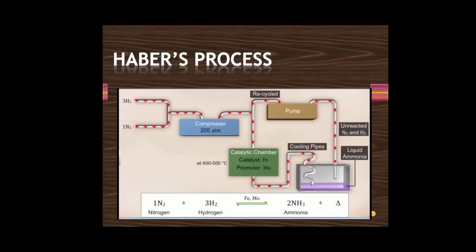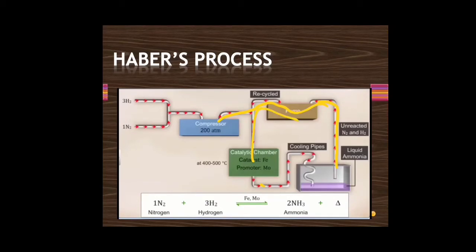Ammonia gas is allowed to cool by passing through cooling pipes and is cooled so it can be liquefied. Ammonia has a very low liquefaction temperature and can be easily liquefied. Once liquefied, it can be separated. Any unreacted hydrogen and nitrogen gases pass back to the compressor or catalytic chamber to be recycled.